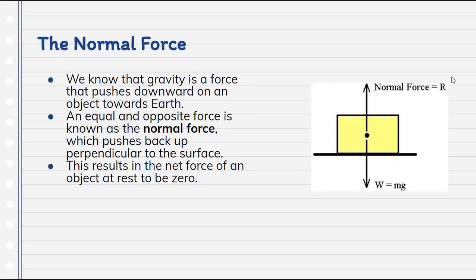So we've talked a lot about gravity already. And we know that gravity is a force that pushes downward on an object towards Earth. We're feeling gravity as we sit in our chairs listening to Mr. Lamb talk about physics. But an equal and opposite force is known as the normal force, which pushes back up. That explains why there's no net acceleration of me continually going through the Earth.